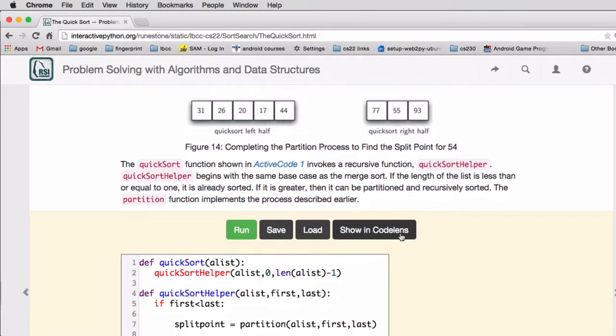There's a bit of work here. There's a quick sort function and there's a quick sort helper. The helper begins with the same base case as the merge sort. The length of the list is, if the length of the list is less than or equal to 1, it's already sorted.